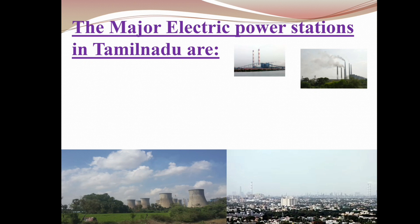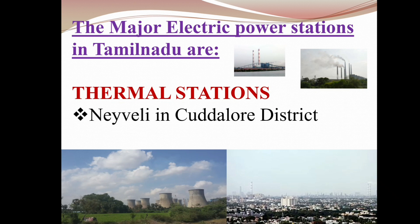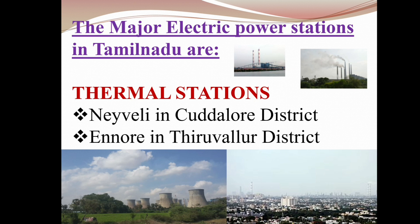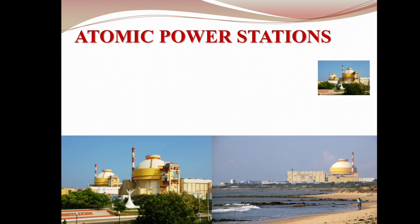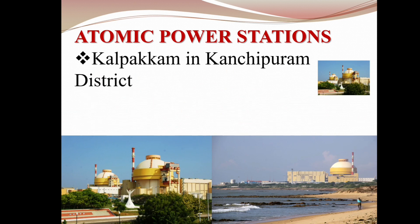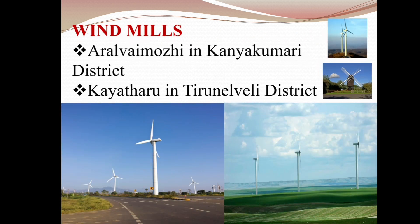The major electric power stations in Tamil Nadu are: Thermal stations — Neyveli in Cuddalore district, Ennore in Tiruvallur district. Hydel power stations — Mettur in Salem district, Papanasam in Tirunelveli district. Atomic power stations — Kalpakam in Kanchipuram district, Kudankulam in Tirunelveli district. Windmills — Muppandal in Kanyakumari district, Aralvaimozhi in Tirunelveli district.